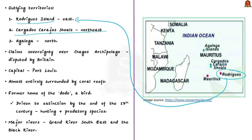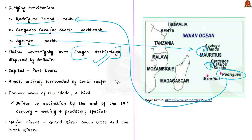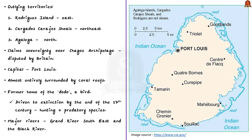The outlying territories of Mauritius also include the Cargados Carajos Shoals to the northeast, and Agalega to the north of the main island. Mauritius also claims sovereignty over the Chagos archipelago to the northwest, though this claim is disputed by Britain which considers it a British overseas territory. The capital of Mauritius is Port Louis. The island is almost entirely surrounded by coral reefs. Mauritius is also the former home of the Dodo, a large flightless bird related to pigeons, which was driven to extinction by the end of the 17th century due to hunting and introduction of predatory species.